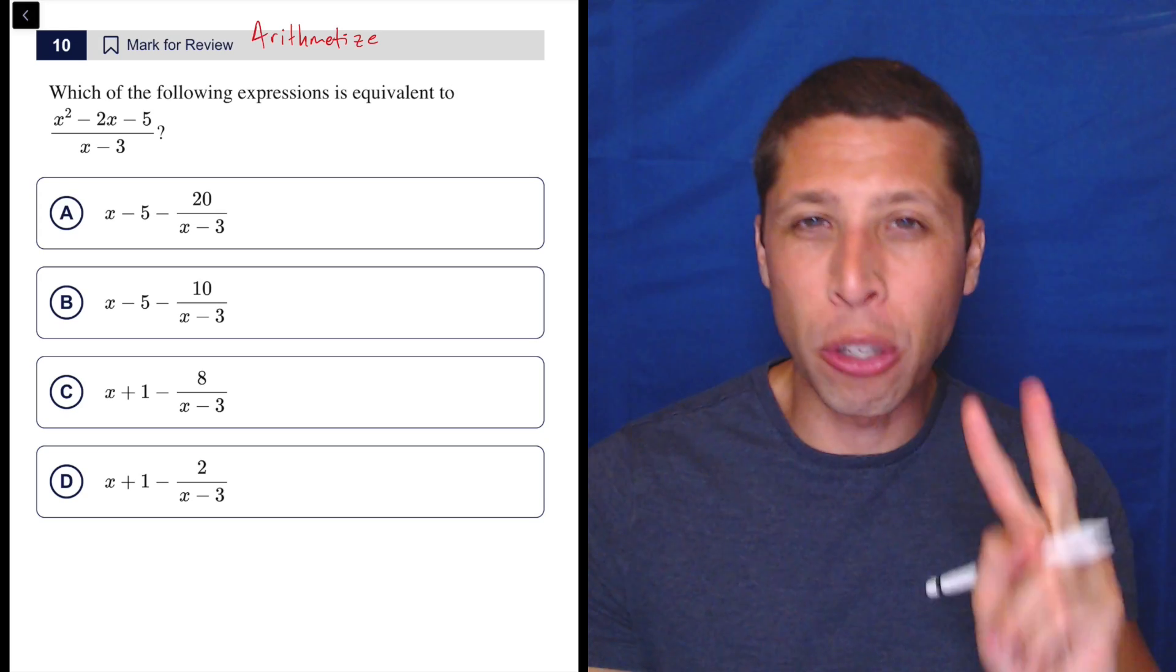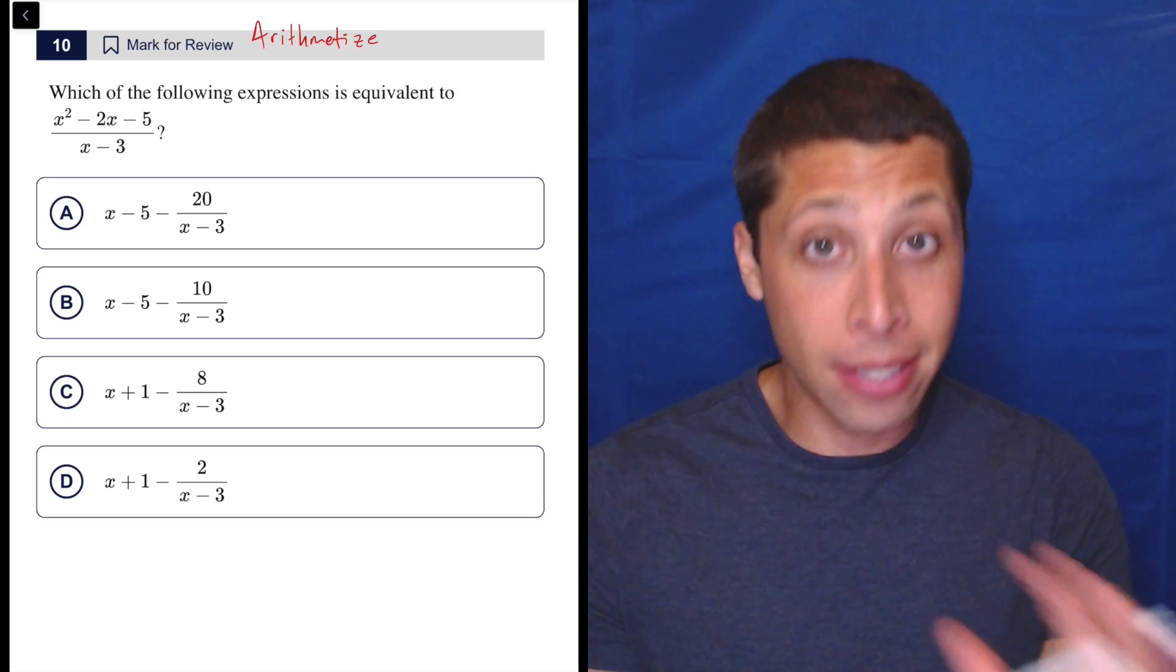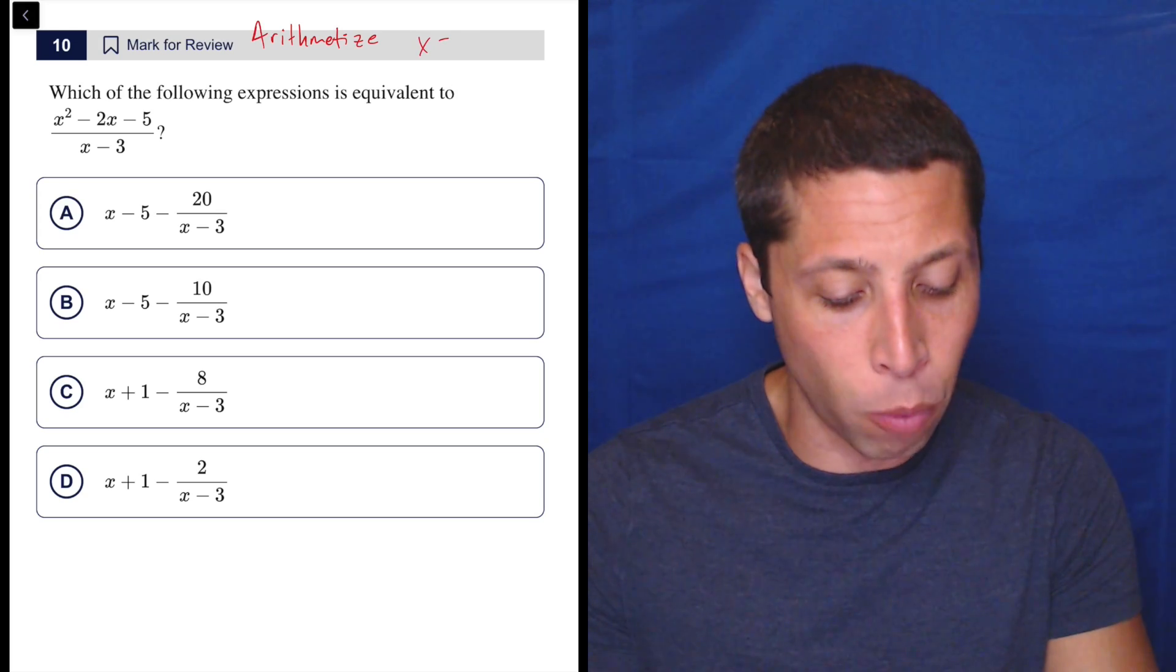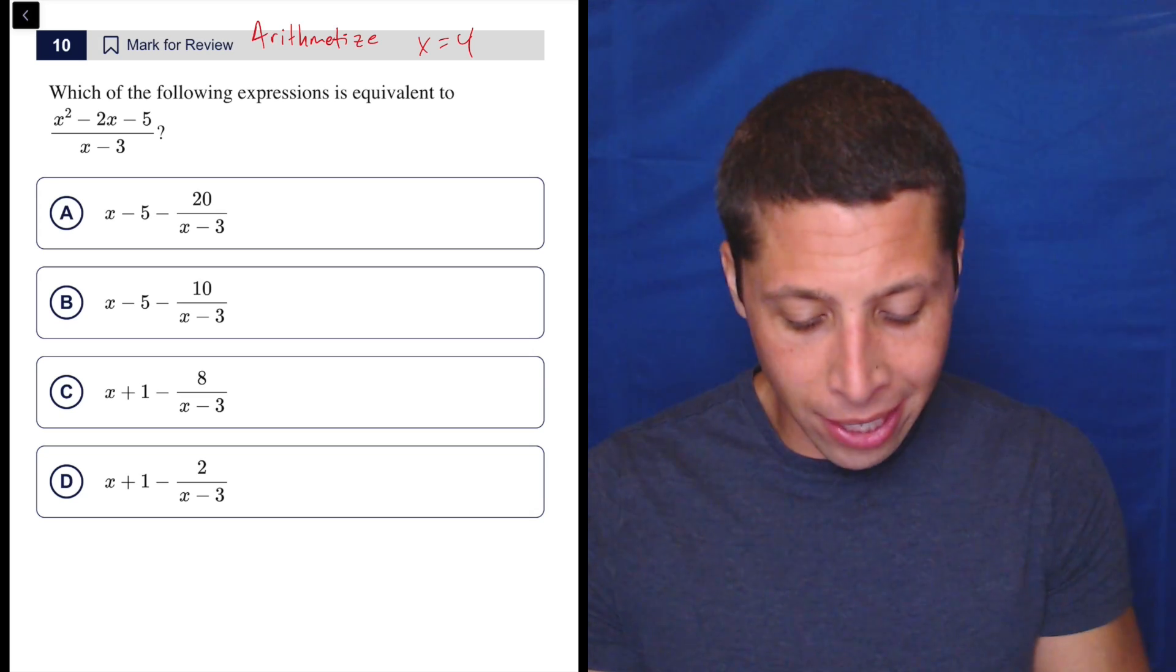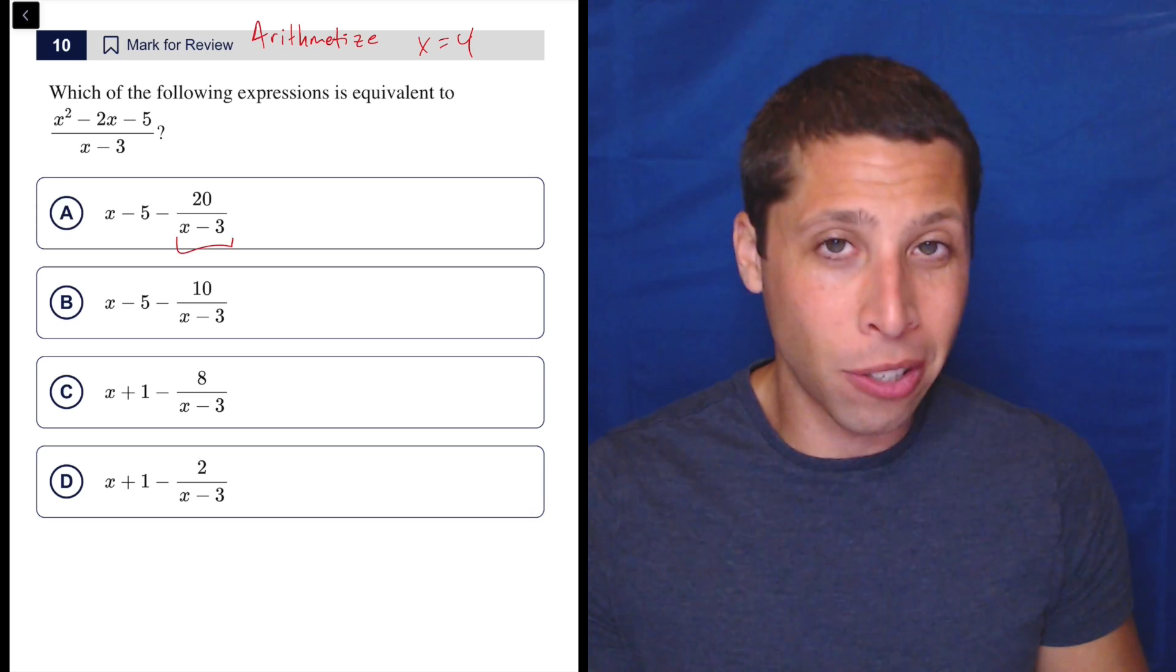I do believe we get some overlap. I do believe if we pick zero, there will be two answers that work. But instead, I'm going to do something a little different. I'm going to pick four. Now, why would I do that? Well, I look at my answer choices, and I see they all have this x minus three.